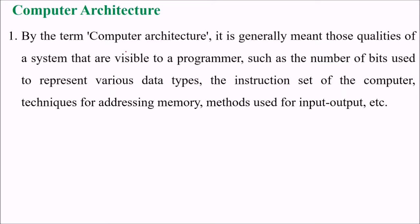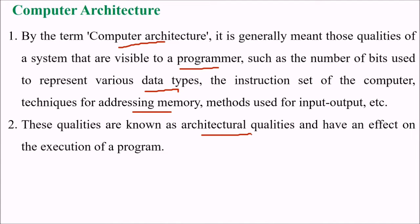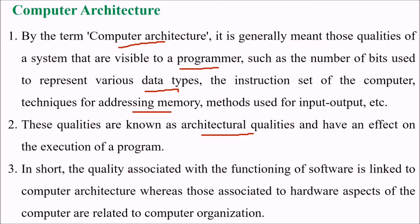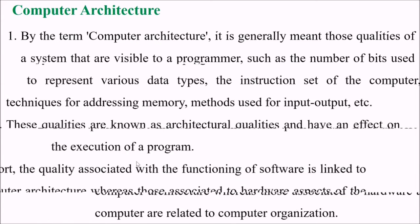By the term computer architecture, we mean those qualities of a system that are visible to a programmer, such as the number of bits used to represent various data types, the instruction set of the computer, the technique of addressing memory, and the method used for input/output. These qualities are also known as architectural qualities and they have an effect on the execution of the program. In short, qualities associated with the functioning of software are directly linked to computer architecture, whereas those associated with the hardware aspect are related to computer organization.